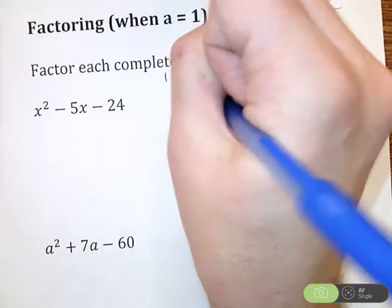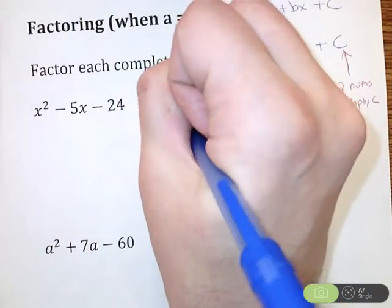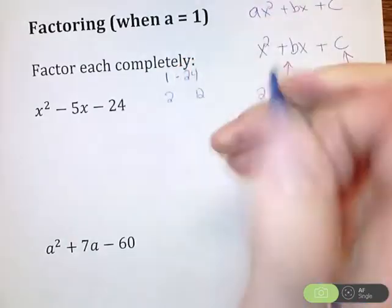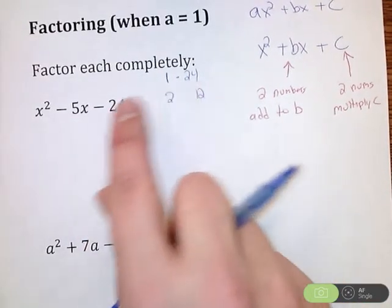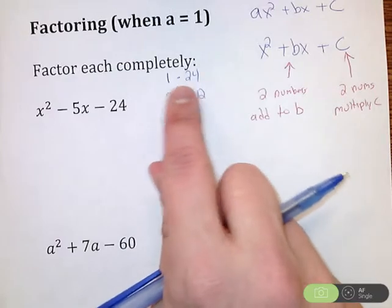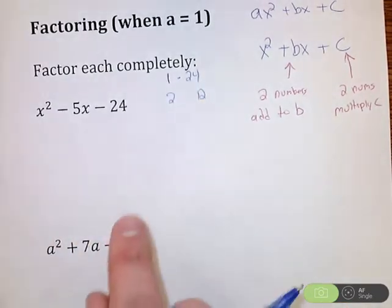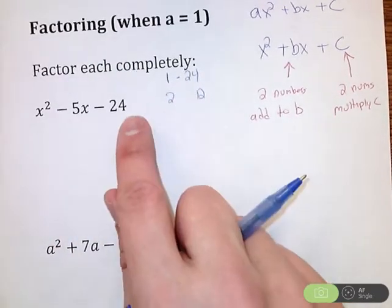So like 1 times 24 would give me 24. 2 times 12. Now, notice how I'm talking about positive 24. I know if I'm going to get negative 24, one of these has to be positive and one has to be negative. I'll figure that out in a second. Right now, I'm just looking for pairs of numbers that give me 24.